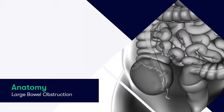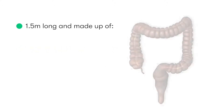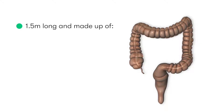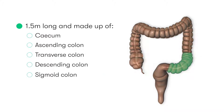Let's take a look at the anatomy of the large bowel. The large bowel starts at the cecum in the right lower quadrant and ends in the anal canal. It's approximately 1.5 meters long and consists of the cecum, the ascending colon, the transverse colon, the descending colon, sigmoid colon, rectum, and the anal canal, where the GI tract ends.